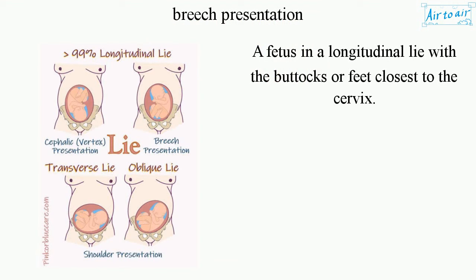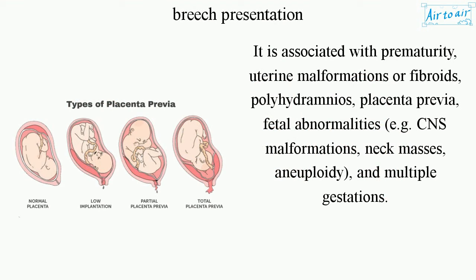It is associated with prematurity, uterine malformations or fibroids, polyhydramnios, placenta previa, and fetal abnormalities — e.g., CNS malformations, neck masses, aneuploidy — and multiple gestations.